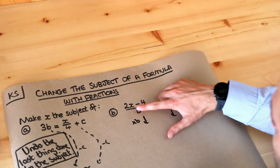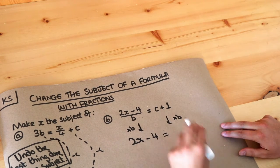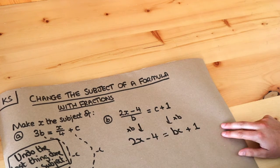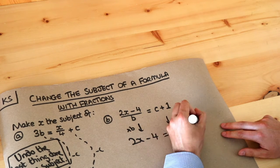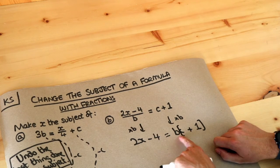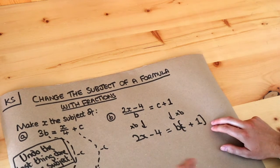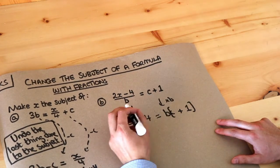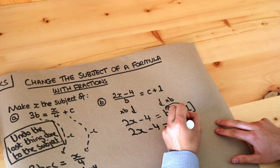Times the left hand side by b gets rid of the over b, giving you 2x minus 4. Then we times the right hand side by b. It'd be wrong to write bc plus 1 like this, because that would only be multiplying the c by b, not the 1 by b. So you could write bc plus b by timesing each thing by b, or we could use brackets. So b brackets c plus 1. Don't use a times symbol by the way. We don't like to use a times symbol in algebra. We should use brackets, just like we don't use a divide symbol, we use fractions. Now we could expand the bracket. So b times c is bc, and b times 1 is plus b.